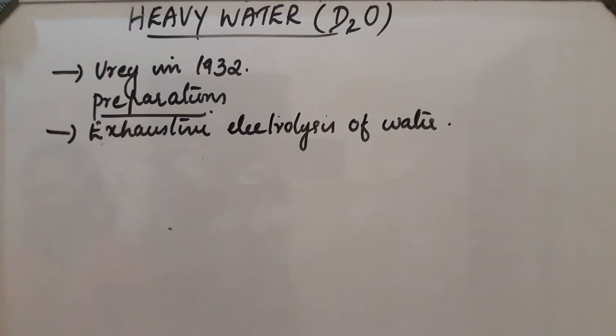Ordinary water contains a very small proportion of D2O, deuterium oxide. When prolonged electrolysis of water is done, H2 is liberated much faster than D2, and the remaining water is enriched with D2O or heavy water.